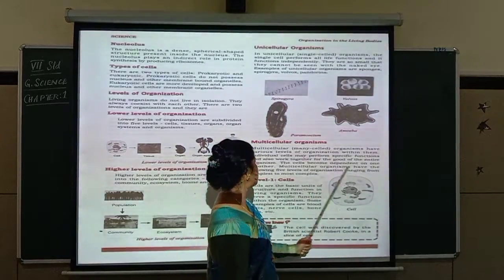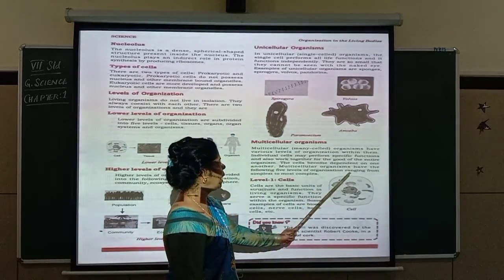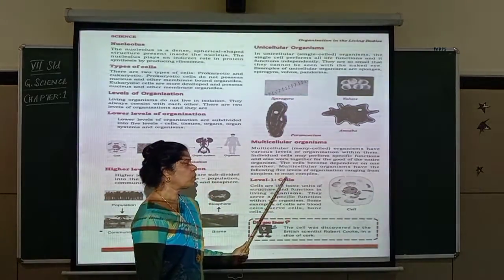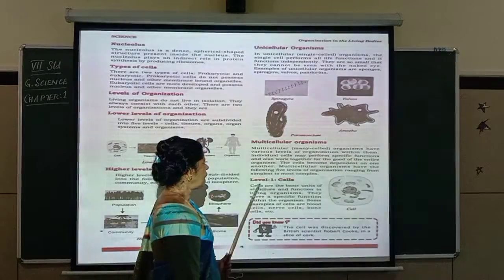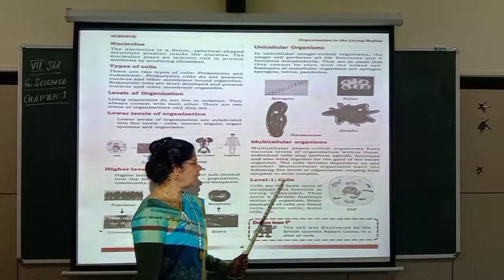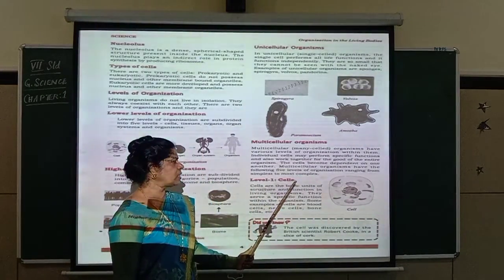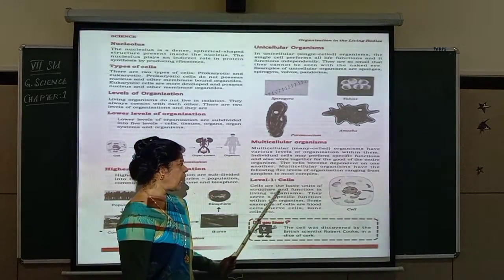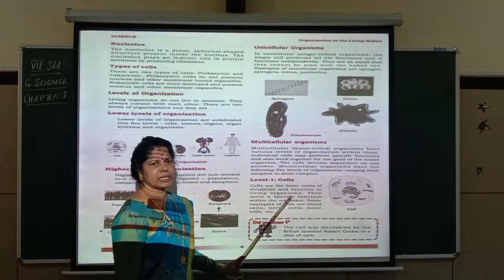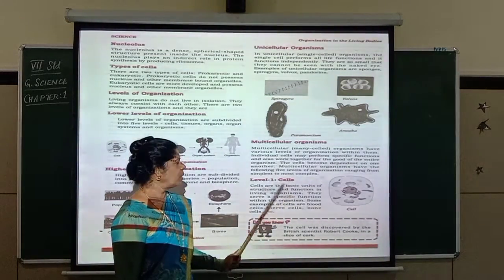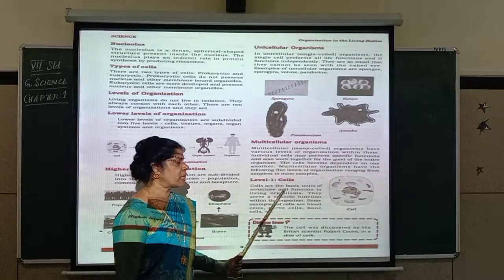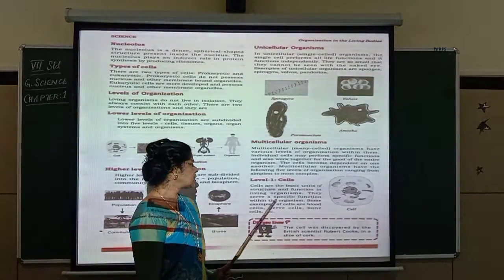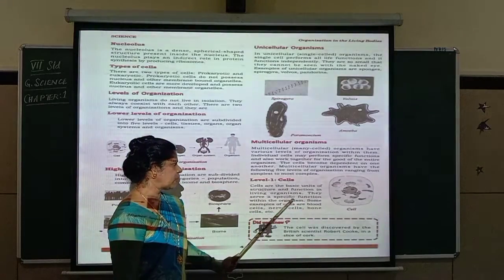Multicellular organisms have five levels of organization, ranging from simplest to most complex. Level one: only cells are present. Cells are the basic units of structure and function in living organisms, as you learned in a previous class. They serve a specific function within the organism.